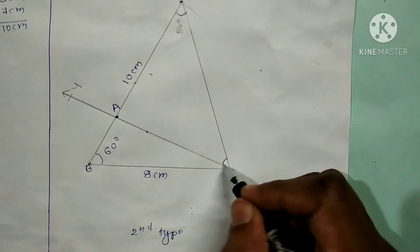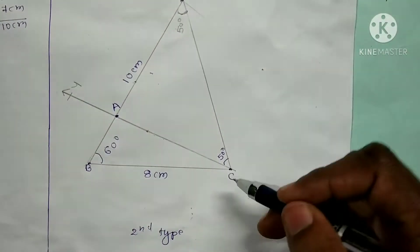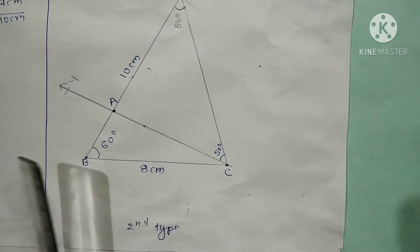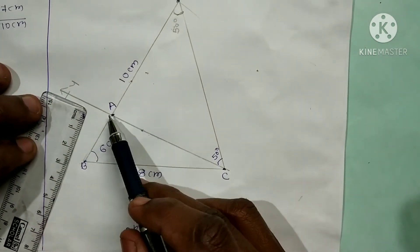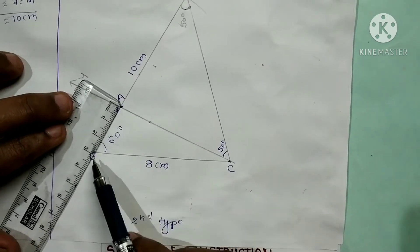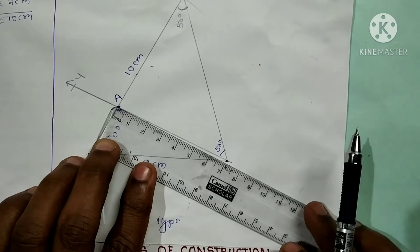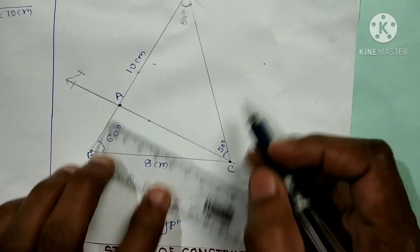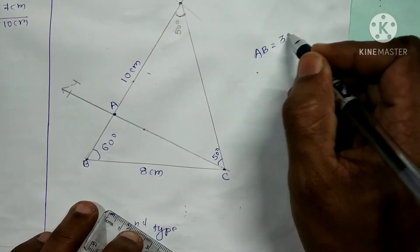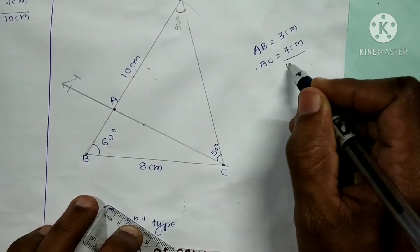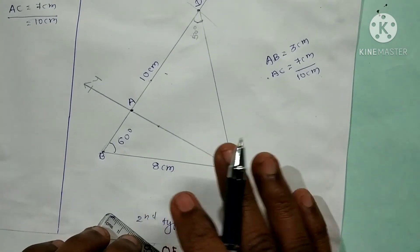Angle D is 50 degrees and angle C is also 50 degrees. This is the required triangle ABC. Now let us verify by using a scale: AB plus AC should be 10 cm. AB is 3 cm, and AC is also 7 cm. So AB equal to 3 cm plus AC equal to 7 cm gives a total of 10 cm. This is the second type, using the protractor.